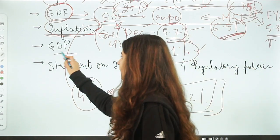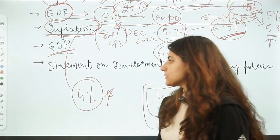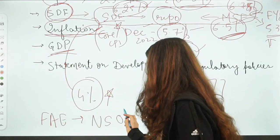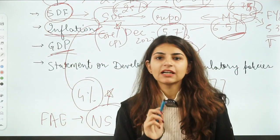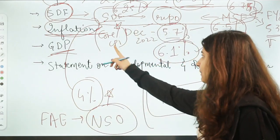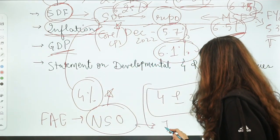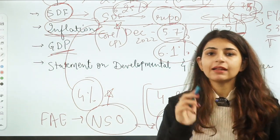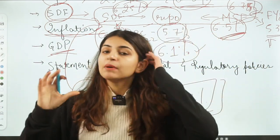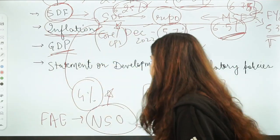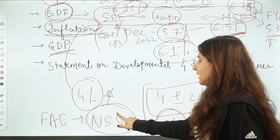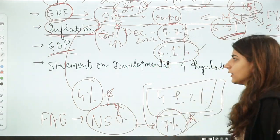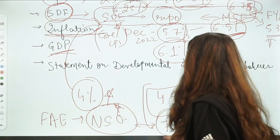Talking about GDP projections — as per the first advance estimate given by the NSO, the National Statistical Office, the GDP projection for this year is expected to be 7%. This 7% GDP projection was also mentioned in this monetary policy committee meeting.